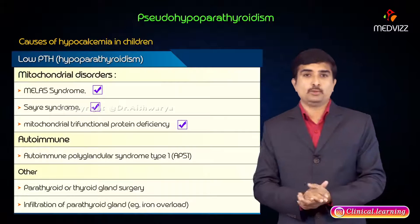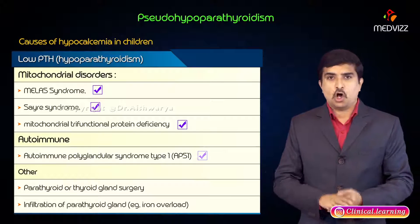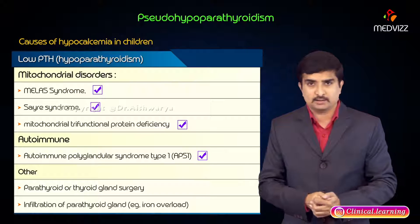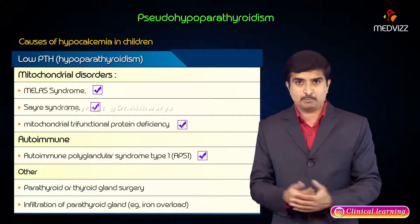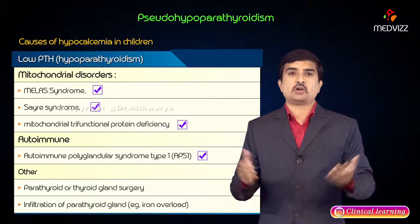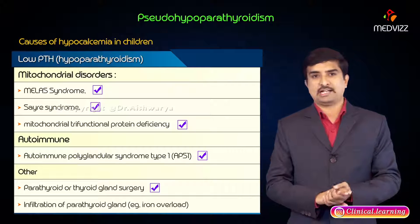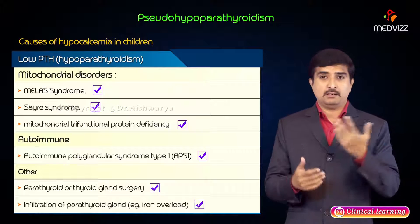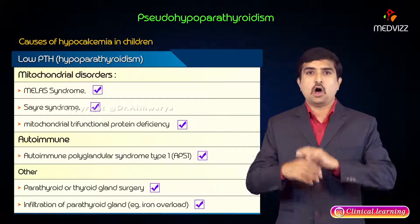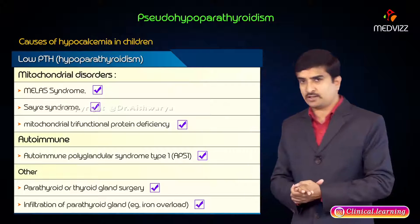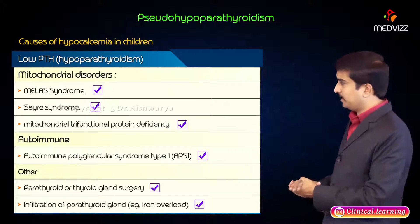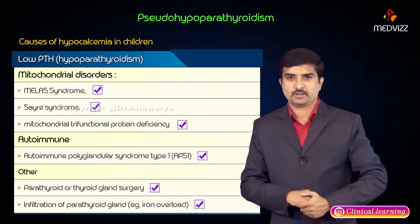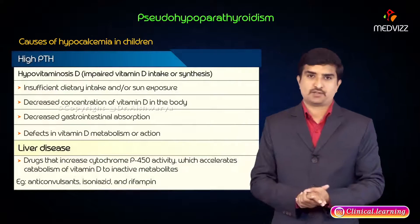Autoimmune causes of hypocalcemia include autoimmune polyglandular syndrome type 1 (APS-1). Other causes include parathyroid or thyroid gland surgery and infiltration of the parathyroid gland, mainly by iron overload — all conditions associated with hypoparathyroidism.